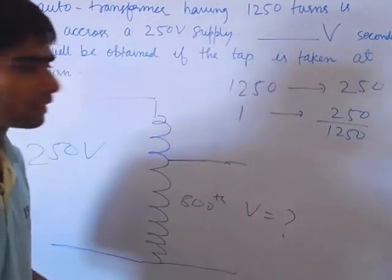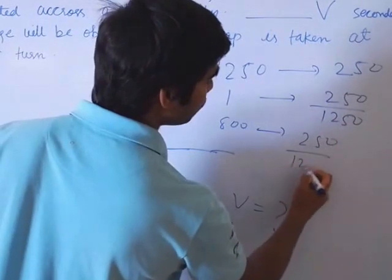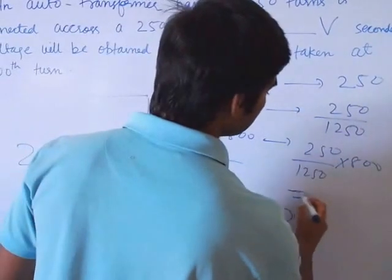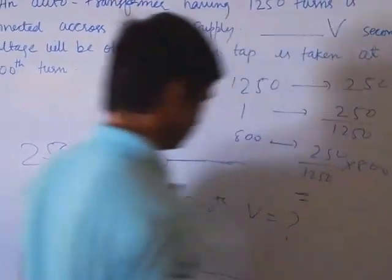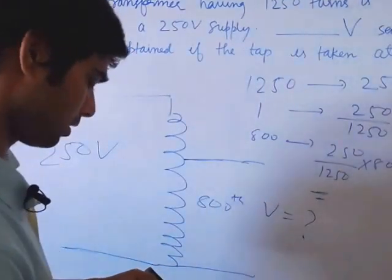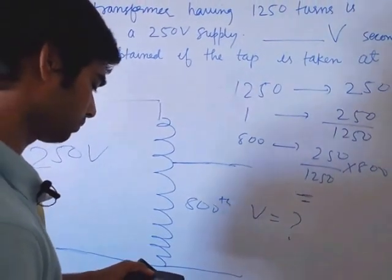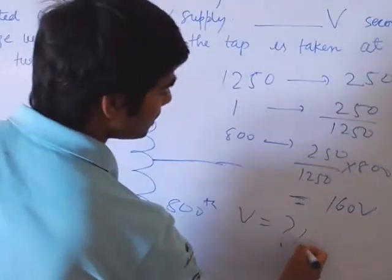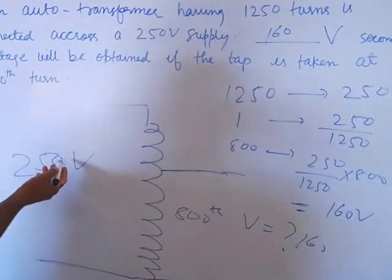How much will be? 250 divided by 1250 into 800. Calculate: 25 divided by 125 into 800, how much is it? 160 volt. How much will be? 160 volt.